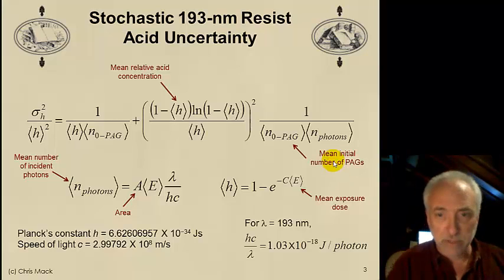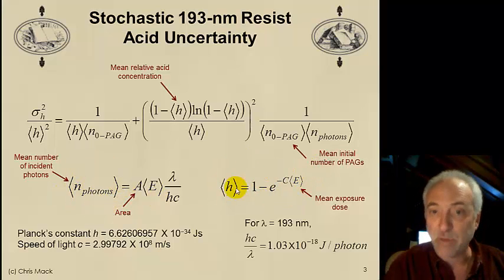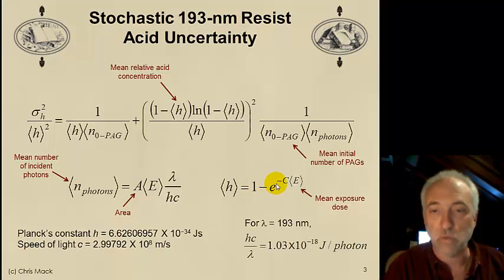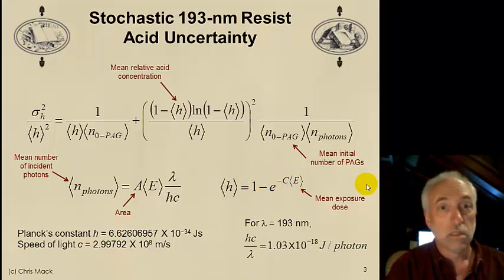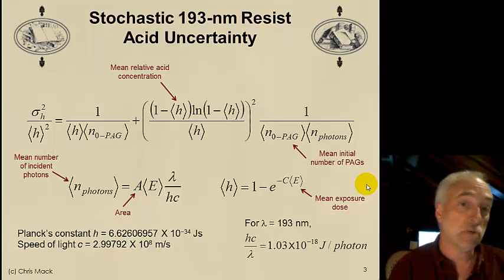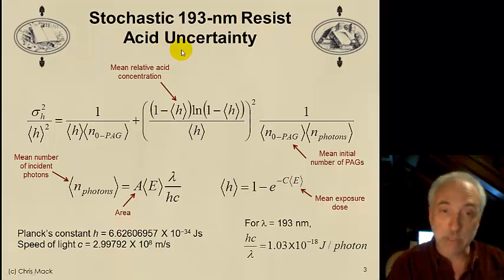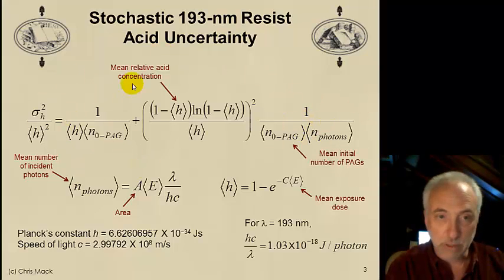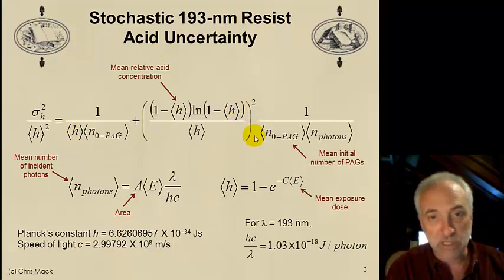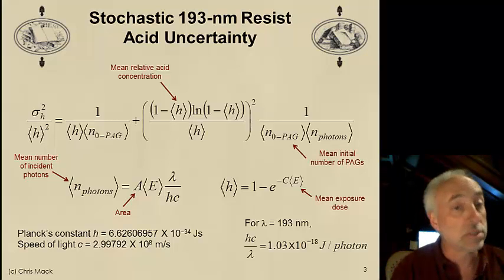We have a certain photon energy and a certain dose that gives us a certain number of photons. We also have our kinetic equation: first-order kinetics of exposure gives the relative number of acids as 1 minus e to the minus C times E. This gives us the stochastic uncertainty in the number of acids generated upon exposure. There's a lot of pieces to it, but it has the basic components of photon shot noise, chemical shot noise, and the exposure reaction term. All of the uncertainty terms combine to produce a certain uncertainty in the amount of acid.